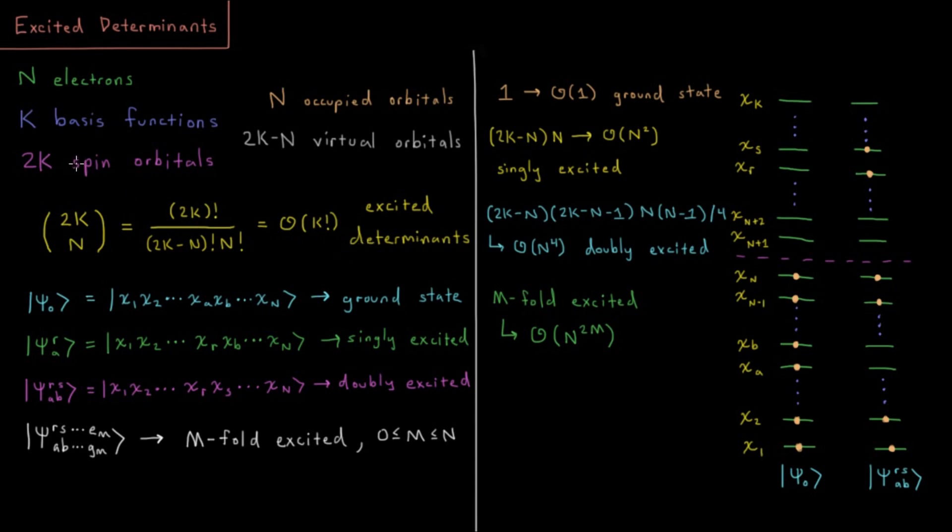Increasing the number of spin orbitals, and every one of those except one is going to be excited, because there's only one ground state and every other determinant is excited.